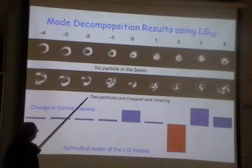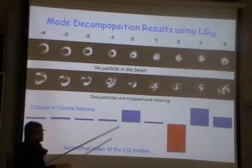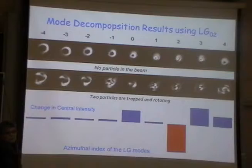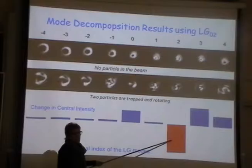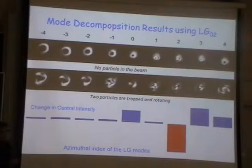Now I put two particles into the beam and rotate them. I have my analysis hologram and look at the light intensity distribution after the hologram. It doesn't look that clean, but if you analyze it, it predominantly shows that the orbital angular momentum transfer is to LG02. However, there are other non-zero bits and pieces — it's not a very clean system, so I can measure it, but not very precisely.